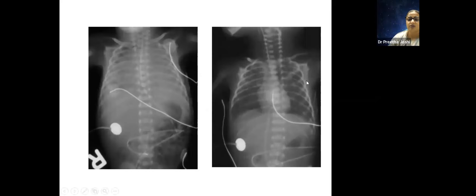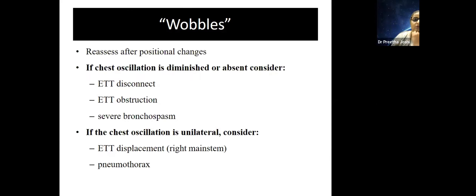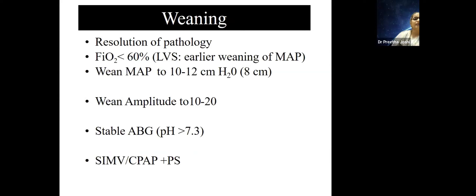Lung inflation can change very rapidly on high-frequency — from severe RDS to completely over-inflated lungs — so X-ray is critical. If chest oscillation is diminished, check if the ET tube is obstructed or disconnected. If chest oscillation is unilateral, consider pneumothorax — which was common in earlier days when babies were put on high-frequency. Today we know the machines better and rarely get pneumothorax.